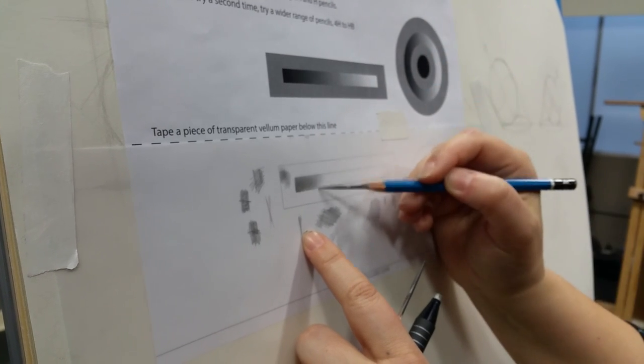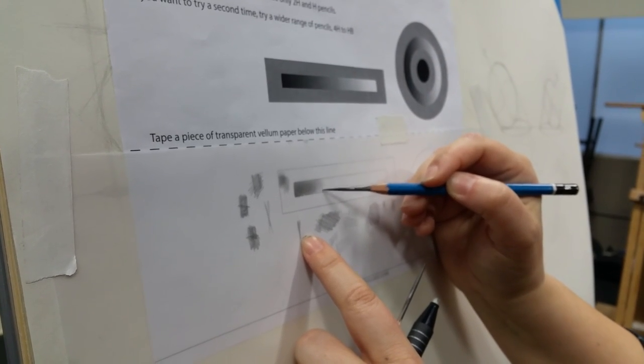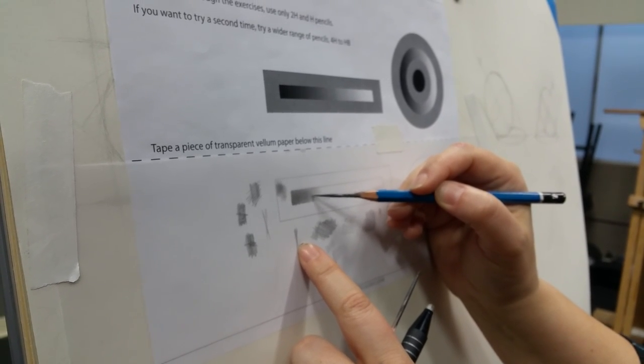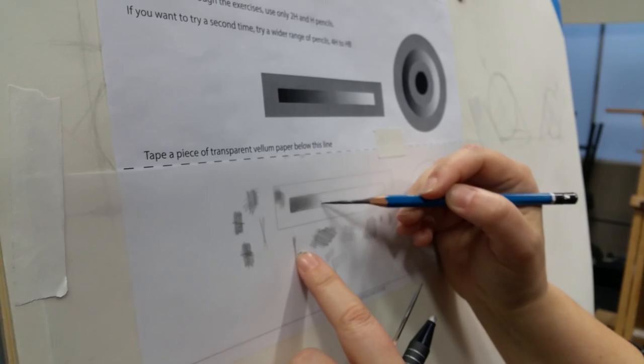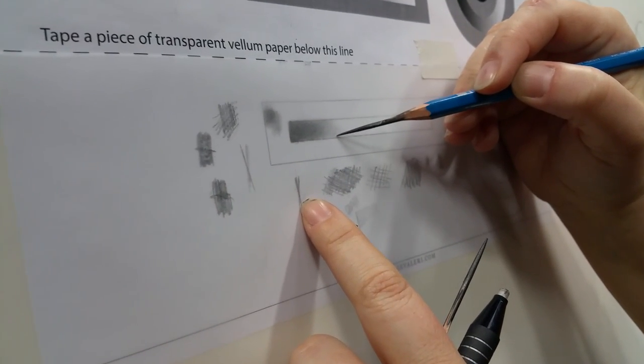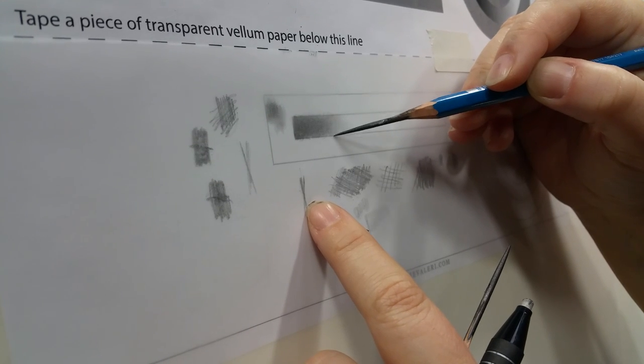you can't tell where the strokes of graphite end and where the paper begins. It should be so light that you're almost not even making a mark. Can you guys see that? Mm-hmm.